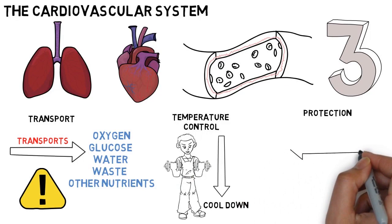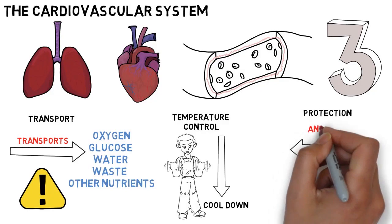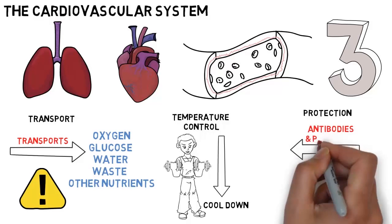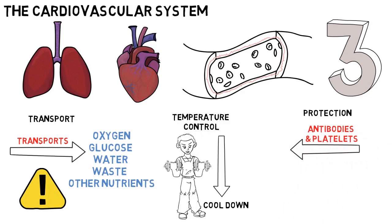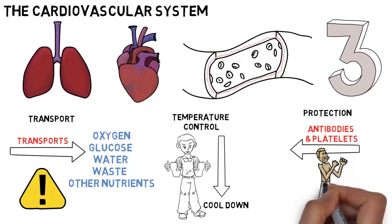Protection. As well as transporting and delivering nutrients to various parts of the body, the cardiovascular system also carries antibodies and platelets in order to fight off disease and clot the blood to seal cuts or wounds.